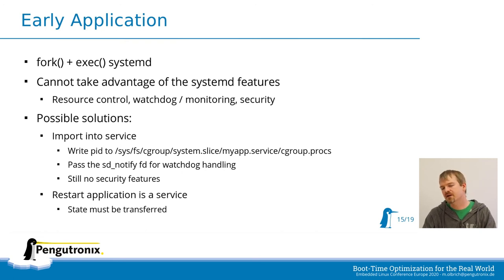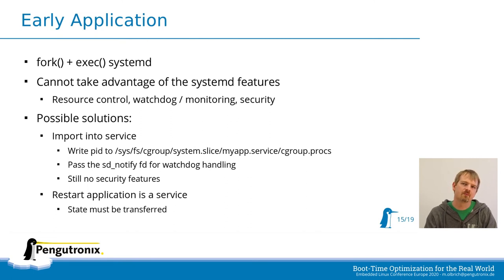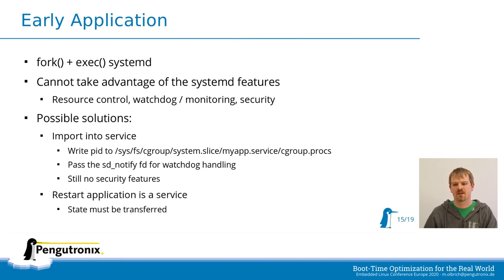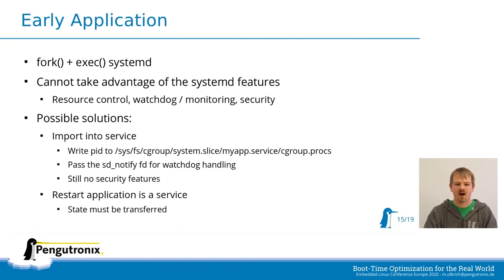If you put in more work, both the splash and the application can be done in an initrd in a ramfs. This saves a little more time if mounting the root file system is slow, since you start the application before mounting the root FS. But this means you also have to first mount the root file system, do the chroot kind of things, and then exec systemd. So there are ways to mix all these features, but every step is a bit more work.